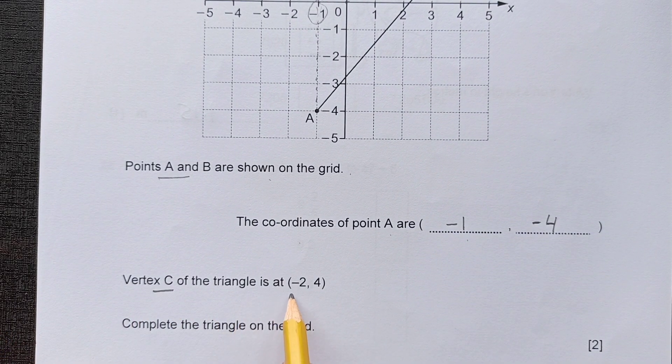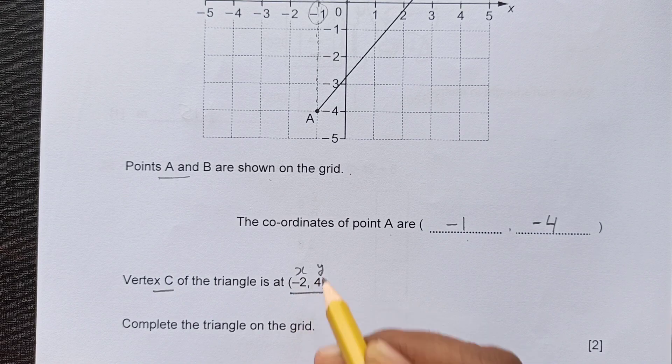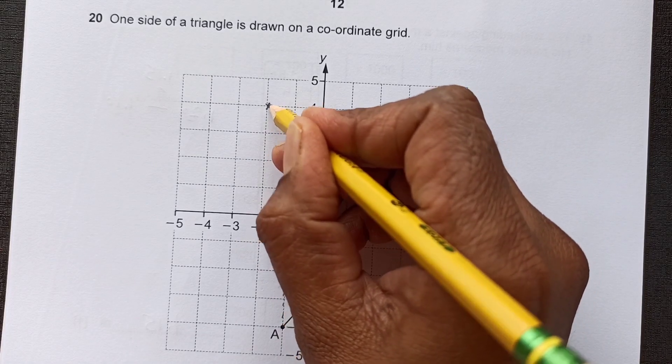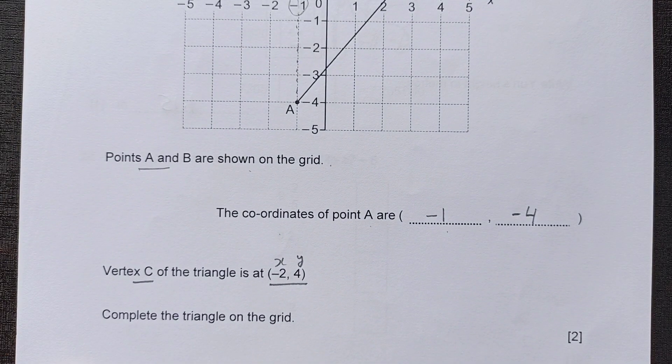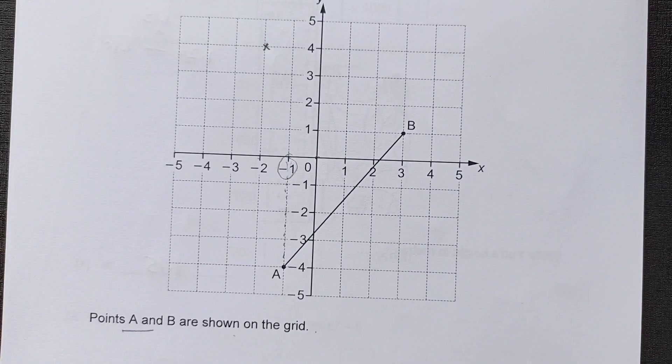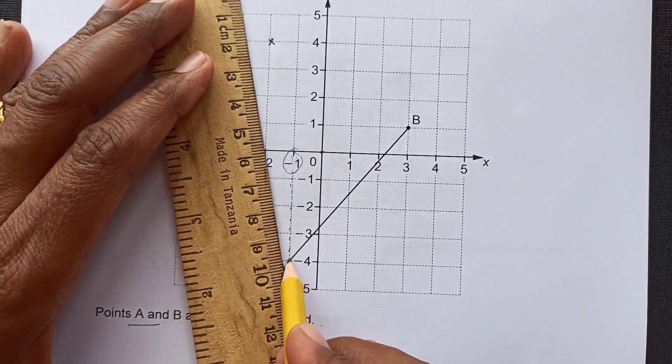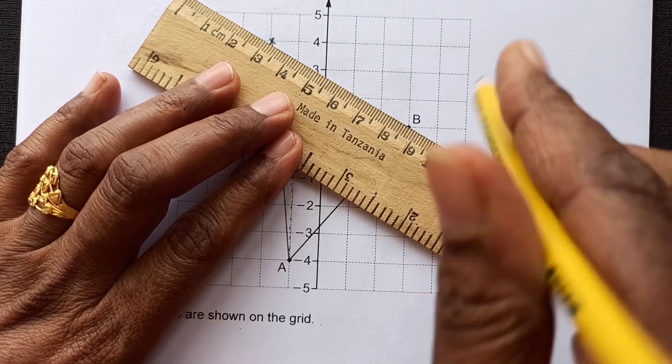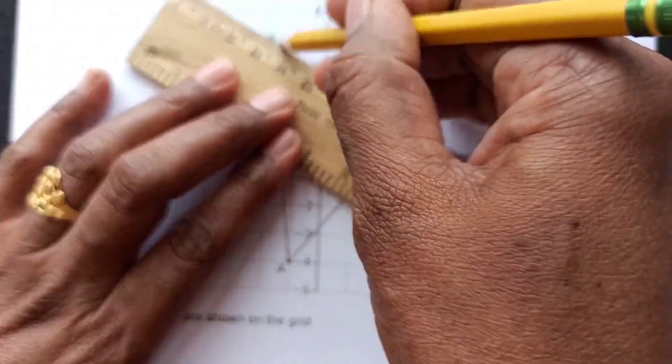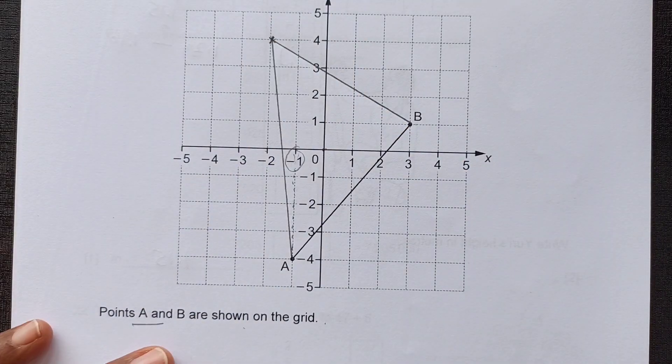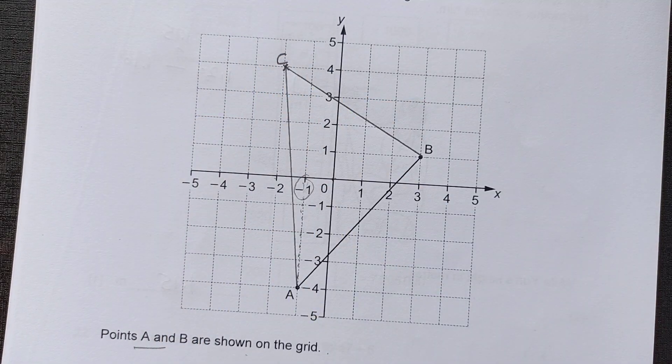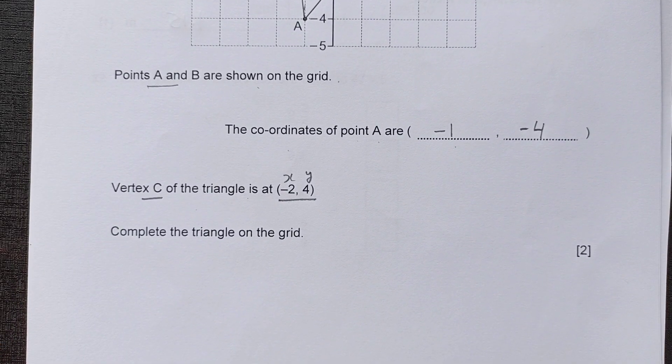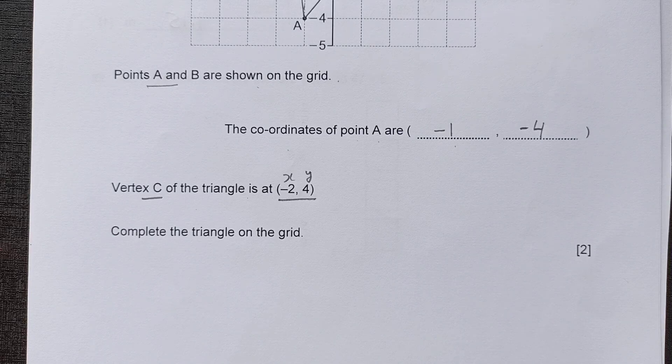Now, vertex C of the triangle is at negative 2, 4. So this is x, this is y. X is negative 2, Y is 4. Y4 is here. So this is the point. Complete this triangle on the grid. So now we got the third point. We can just join these points to make a triangle. Use your ruler and make a straight line there to join all the coordinates. So this is the triangle. This is point C. This question is worth 2 marks, so be careful while drawing all the coordinates and lines.